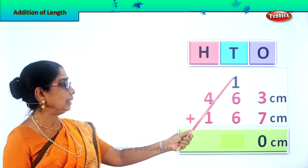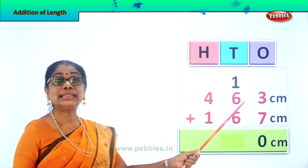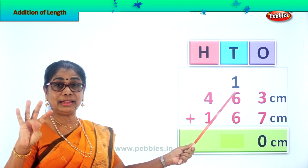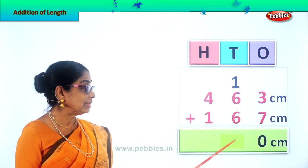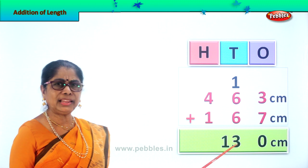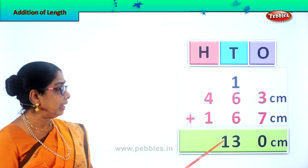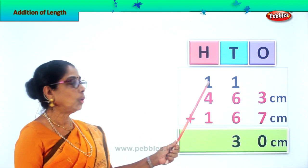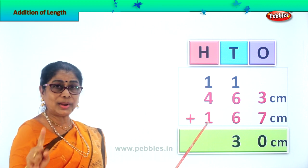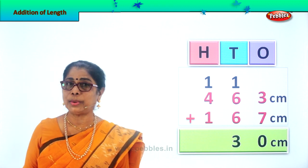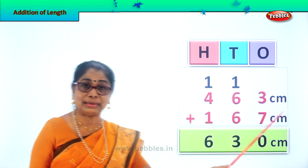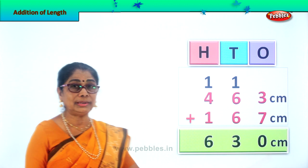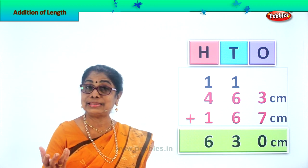Let's add all the numbers in the 10's place. 6 plus 1 is 7. 7 plus 6 is 13. We put down 13 here — 3 we leave in the 10's place, and the 1 ten we carry and put it in the 100's place. Now let's add all the numbers in the 100's place. 1 plus 4 is 5. 5 plus 1 is 6. So we write down 6 over here. 463 centimeters plus 167 centimeters is equal to 630 centimeters.